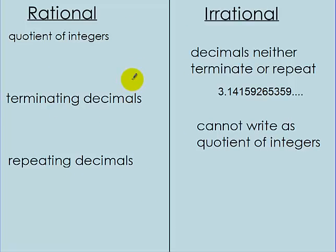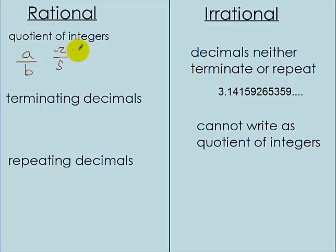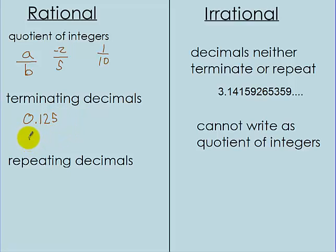Two other ways to categorize real numbers are rational and irrational. Rational numbers can be written as a quotient of integers — you're dividing. So this can be represented as A divided by B, where A and B are integers. For example, negative 2 over 5 is a rational number, as is 1 over 10. Rationals can also be terminating decimals, like 0.125 or 0.5 — terminating means it ends and doesn't keep repeating forever.